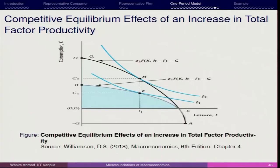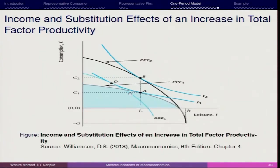It may happen that the representative consumer may not want to work for the same number of hours they used to work — they may be supplying a limited number of hours. It all depends upon the representative consumer's decision. In the case of income and substitution effect, here we have point B, and once we draw a parallel line to drive the income and substitution effect — we draw the parallel line because the representative agent has moved from A to B.